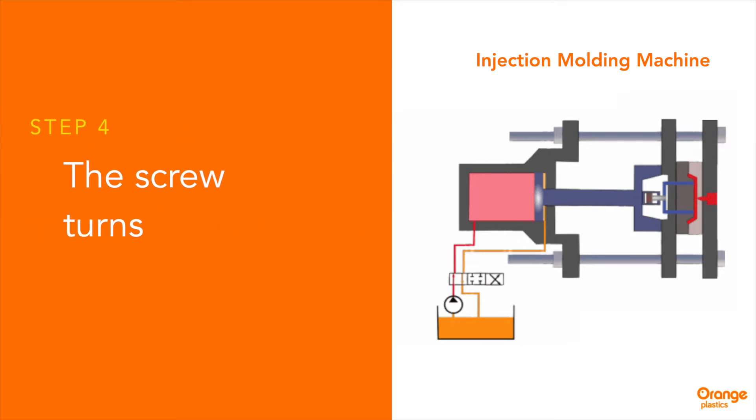Next, the screw turns, feeding the next shot to the front screw. This will make the screw retract as the next shot is prepared.